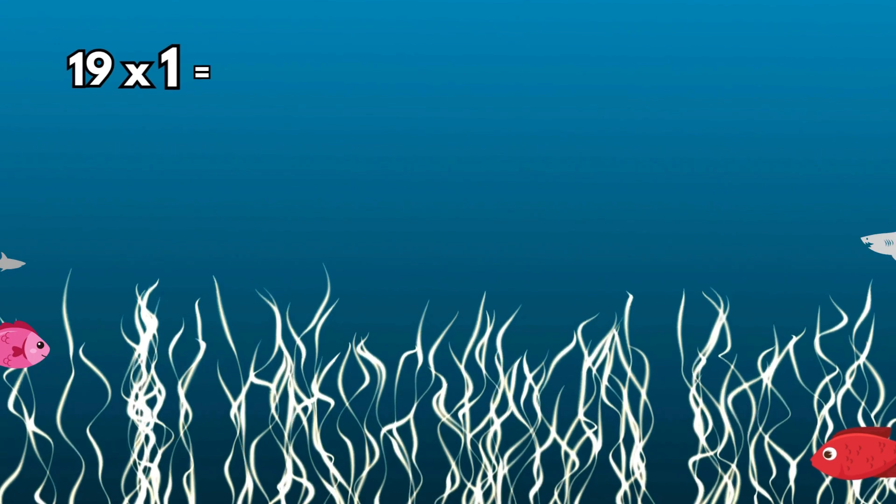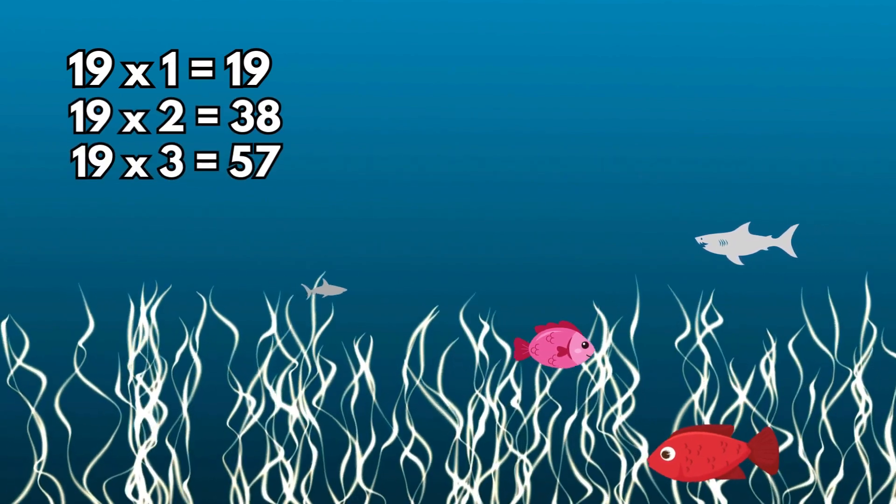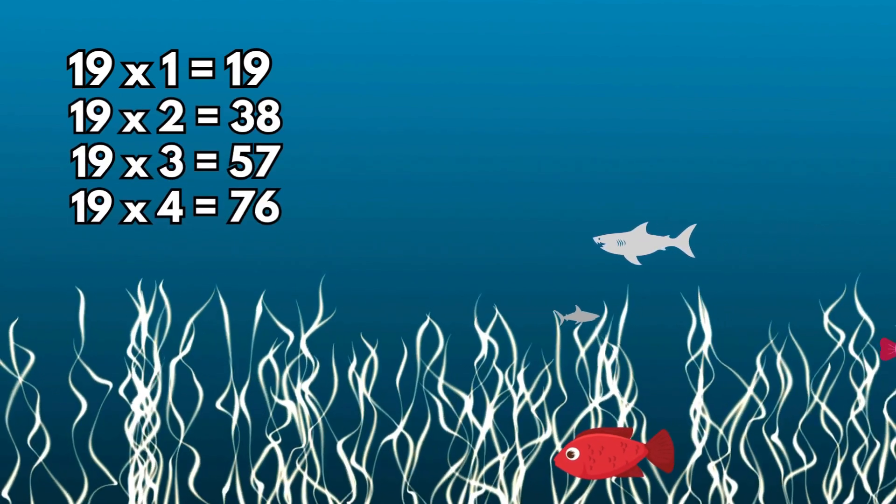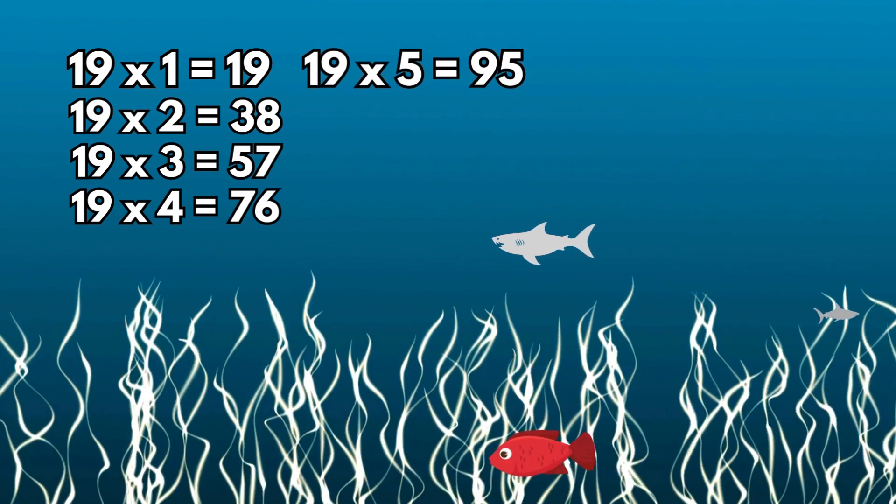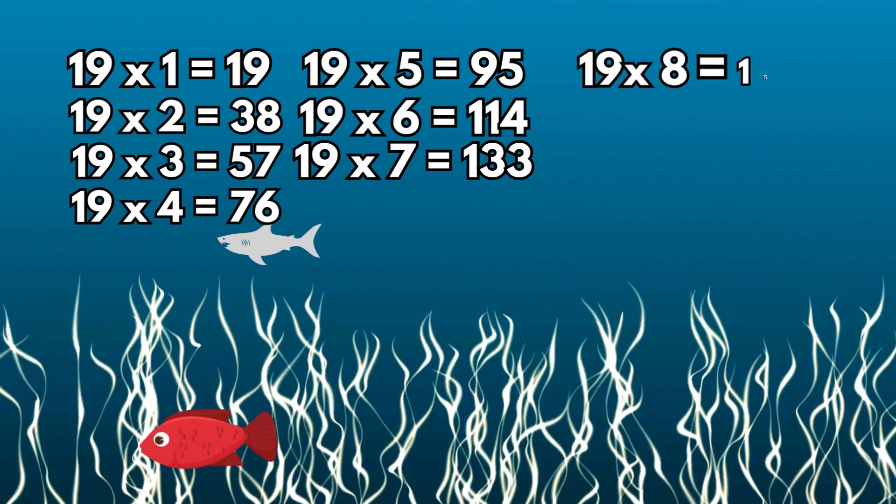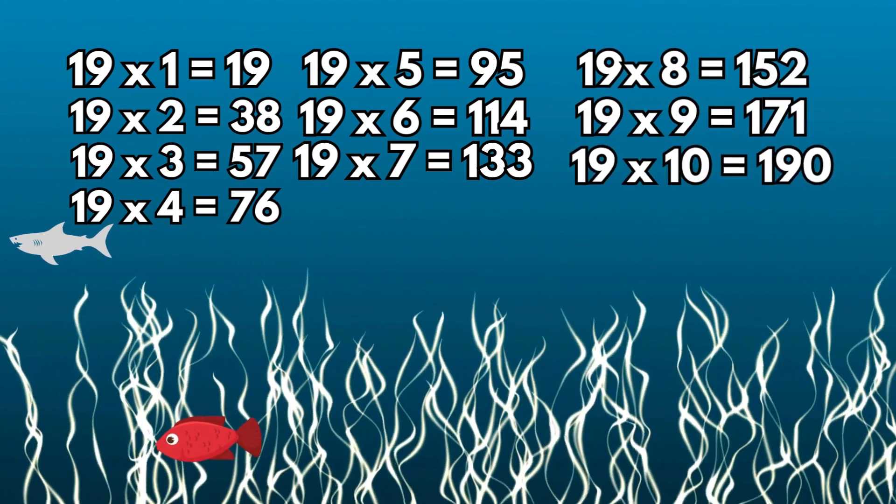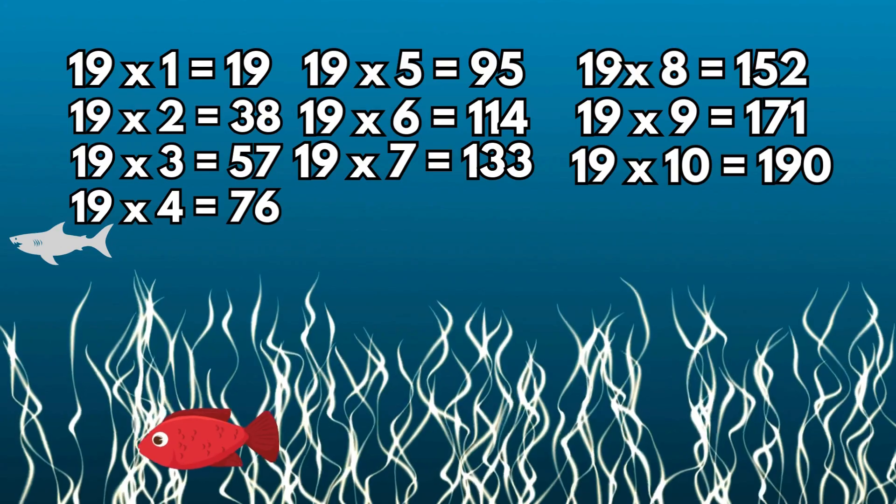Table of 19. 19 1's are 19, 19 2's are 38, 19 3's are 57, 19 4's are 76, 19 5's are 95, 19 6's are 114, 19 7's are 133, 19 8's are 152, 19 9's are 171, 19 10's are 190.